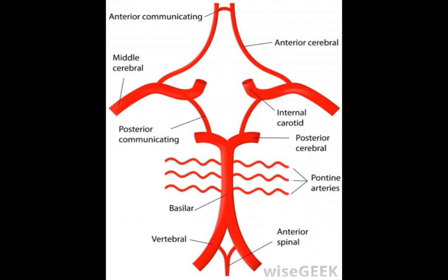The basal or interpeduncular cistern is located where the arachnoid mater crosses between the two parts of the brain's lower region. The arachnoid mater is one of the membranes that covers the components of the central nervous system, or the brain and spinal cord.